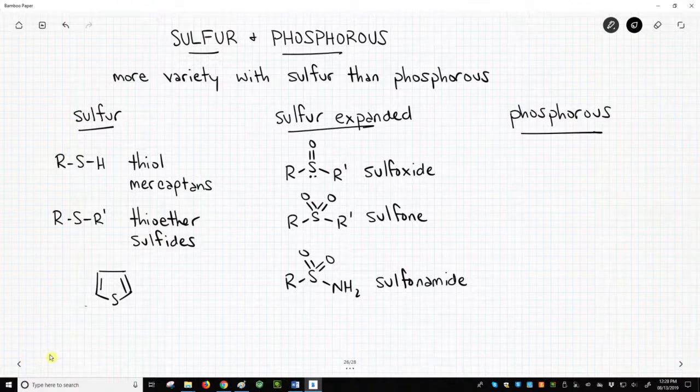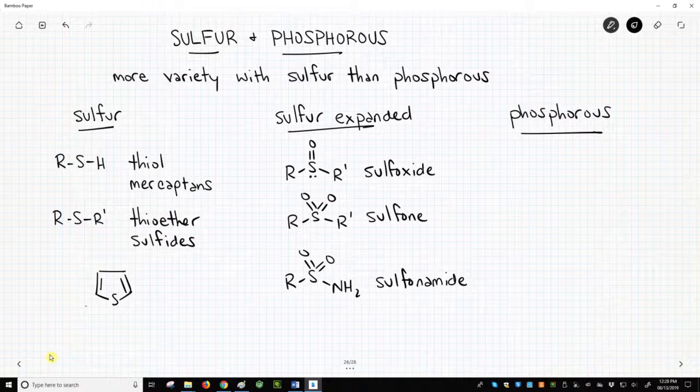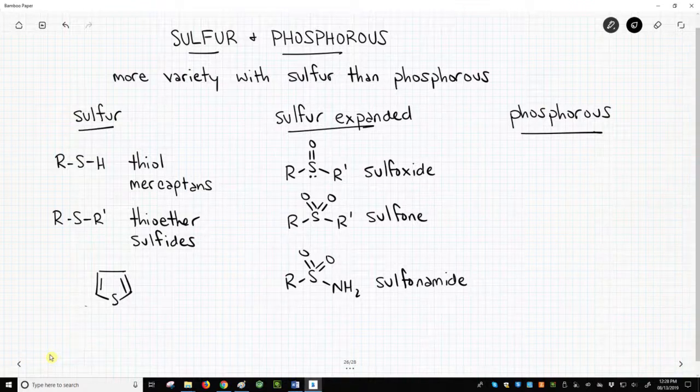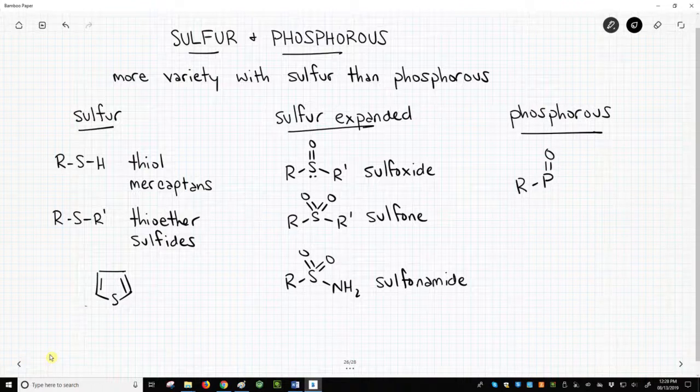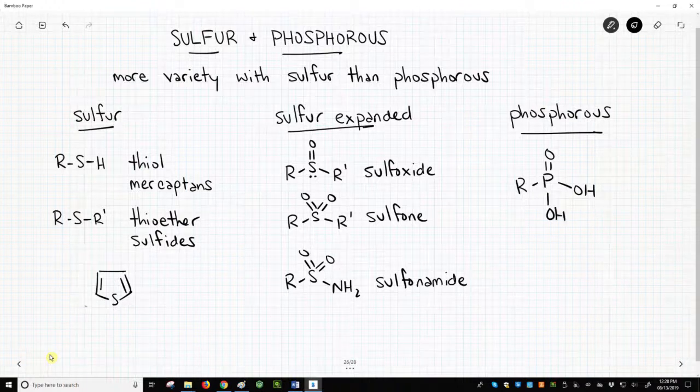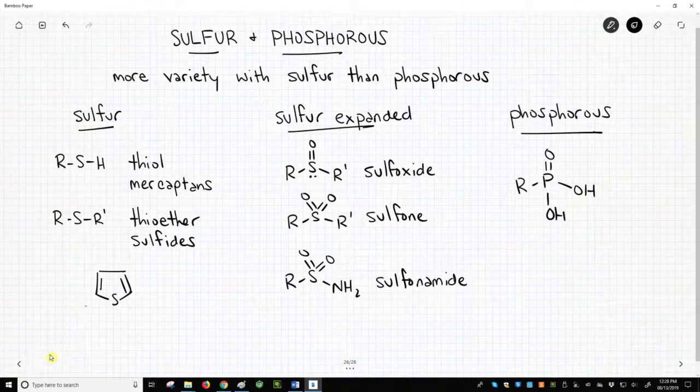Phosphorus is uncommon in drugs. When seen, it often has an expanded octet and a double bond to oxygen. One case is a phosphonic acid, in which the phosphorus is bonded to an R-group and two OH groups.